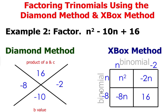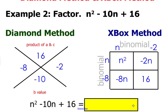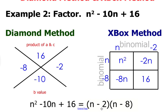And lastly, negative 8 times negative 2 gives you a positive 16. So therefore, when you factor n² - 10n + 16, in factored form it is (n - 2)(n - 8).